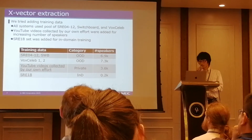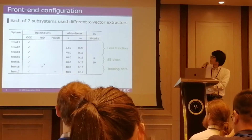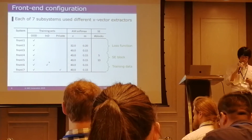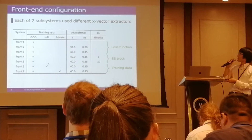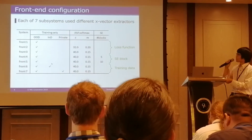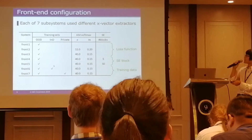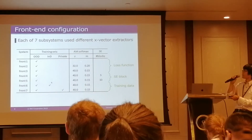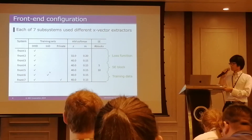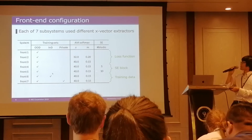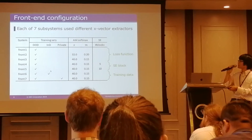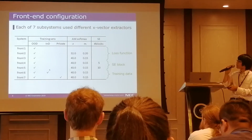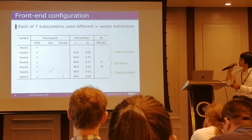As I mentioned, we have seven X-vector extractors. This table shows the configuration. From Front1 to Front3, the difference is the loss function. Front1 uses naive softmax loss. Front2 and Front3 use additive margin softmax loss with different hyperparameters. Front4 and Front5 use a varying number of SE blocks. Front6 uses in-domain data — the SRE18 evaluation data — for X-vector training. And Front7 uses our own private YouTube video data for X-vector training.